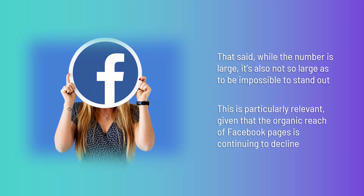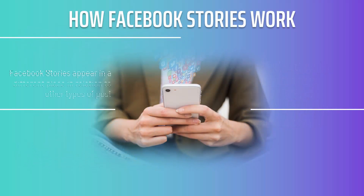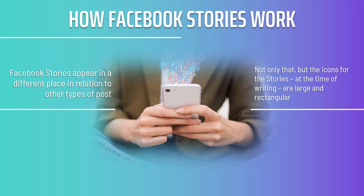This is particularly relevant given that the organic reach of Facebook pages is continuing to decline. Facebook is seeing more users migrate from its platform and is presumably worried that a prevalence of advertisements on news feeds is the culprit — as such, content from pages has been deprioritized. Through stories, however, business owners now have a new way to cut through the noise. Facebook stories appear right at the top of the app — the first things users see when they open Facebook — and the icons for stories are large and rectangular, ideal for consuming on mobile. This makes them very difficult for a user to miss.